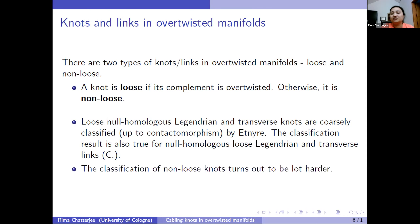The problem is with non-loose knots. Whenever a knot has tight complement — no over-twisted disc in the complement — the classification becomes really hard because tight contact structures are very hard to classify. It's kind of the same situation as trying to classify tight contact structures on a 3-manifold.